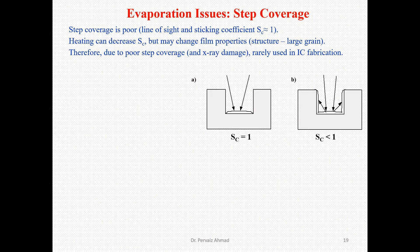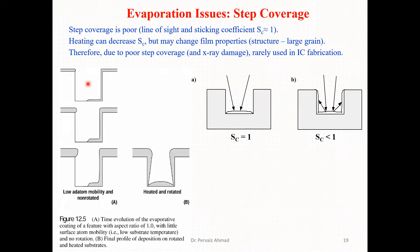The reason evaporation is rarely used in IC fabrications is the production of X-rays and poor step coverage. Here we see two figures: figure A shows low lateral surface atom mobility with a non-rotated structure. Figure B shows a heated and rotated substrate. In case A, we have a substrate placed in the evaporation system without rotation, with low substrate temperatures.